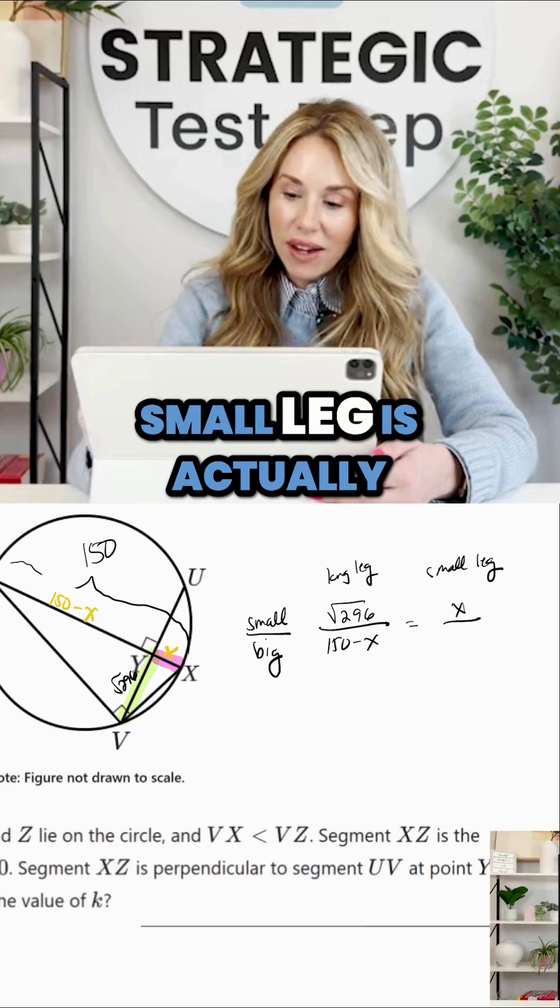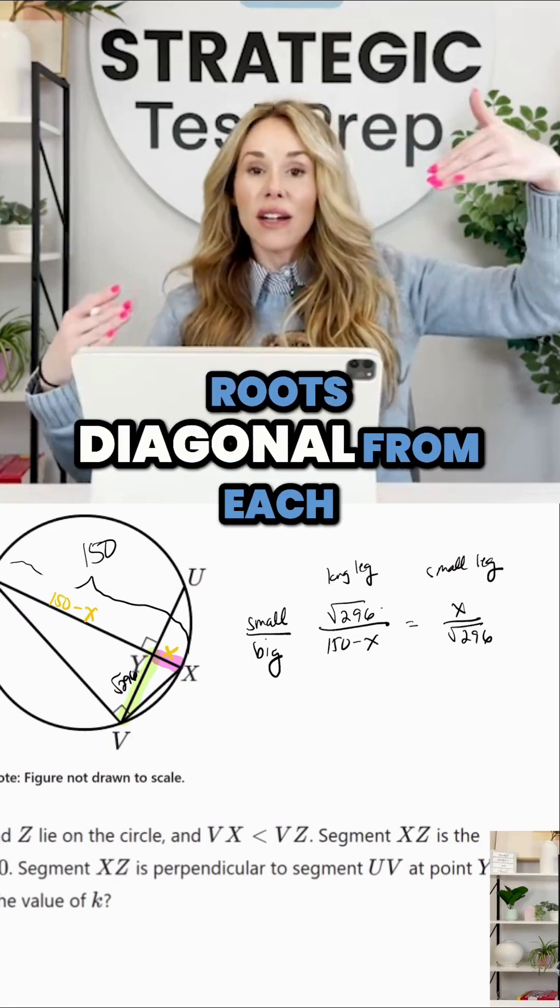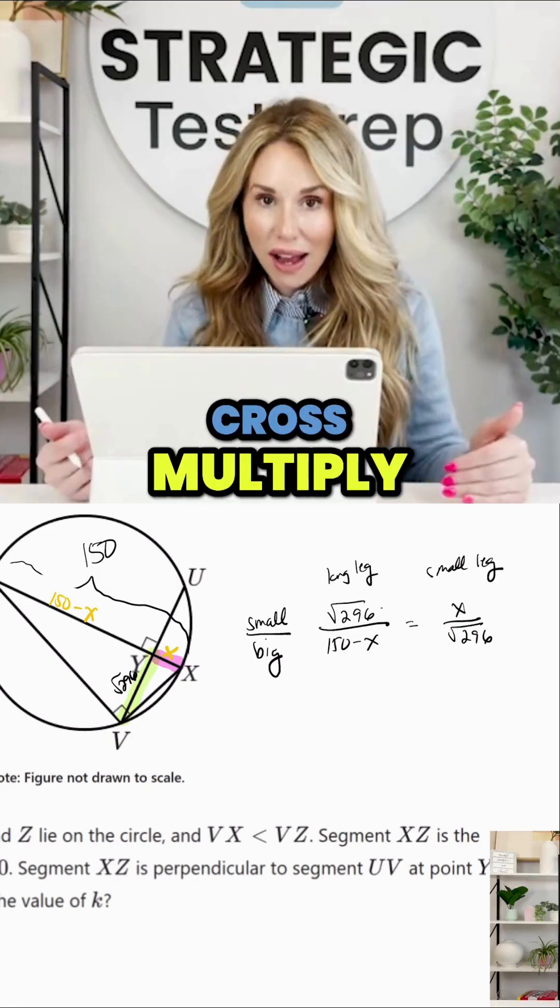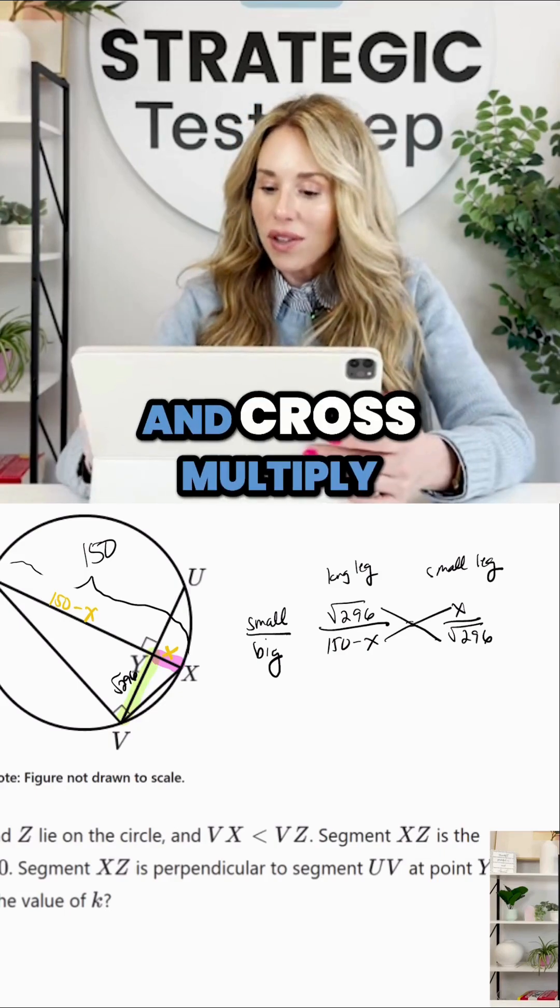And the big triangle's small leg is actually square root of 296. Anticipate getting the square roots diagonal from each other, because when you cross multiply, you should get a whole number. Really, this is a quadratics problem in disguise. So let's go ahead and cross multiply.